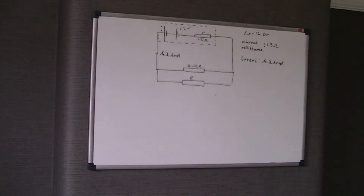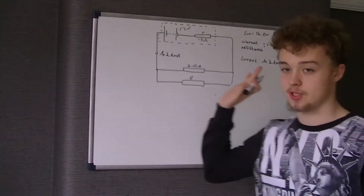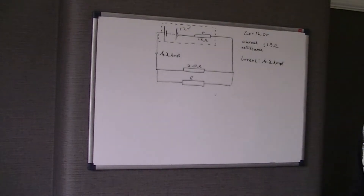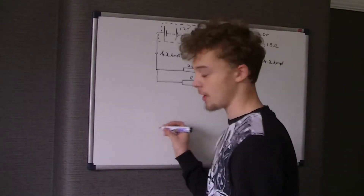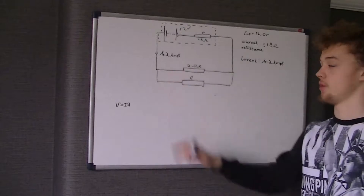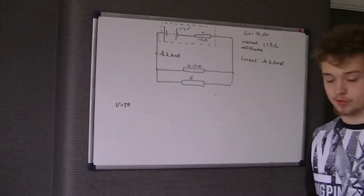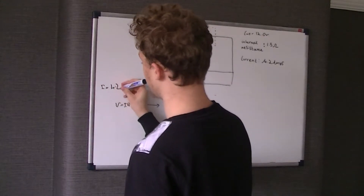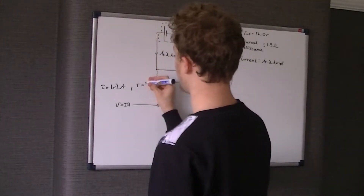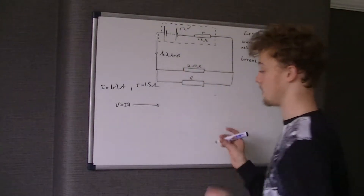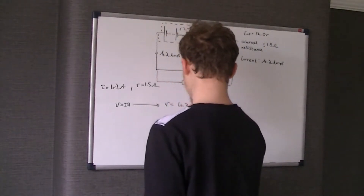The first question says: show that the potential difference across the internal resistance is 6.3 volts. The 12 volts is the EMF, not the potential difference — that's what the lazy student would assume. Using V = IR, we know all 4.2 amps flows through the internal resistance. So the potential difference equals 4.2 amps × 1.5 ohms = 6.3 volts.